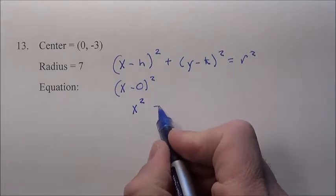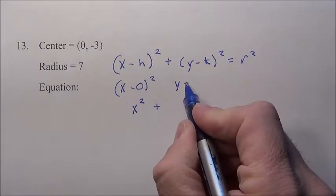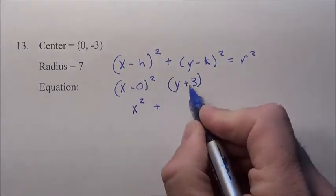so that's just going to be x squared plus, now here you're going to do y minus the k value, minus a negative 3. That's going to change to a plus 3 squared.